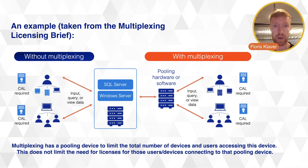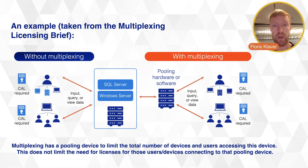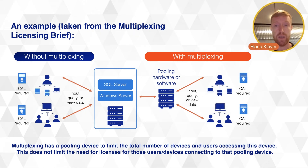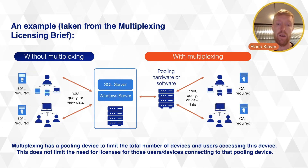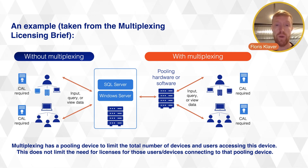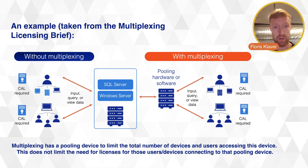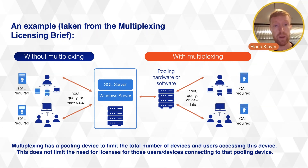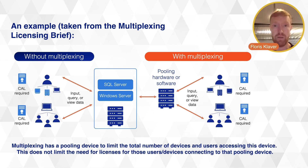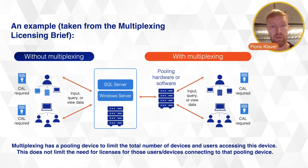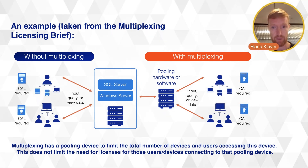You cannot just license the intermediate machine — you need to license the people that are benefiting from accessing that piece of Microsoft software. The same principle applies to cloud. For example, if this is an Exchange Online environment and you have one license, you are not allowed to give login access to that Exchange account to all your users sharing that same account. Cloud is a bit different, obviously, but multiplexing counts there as well.